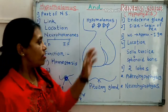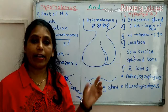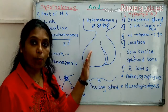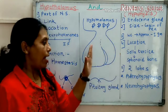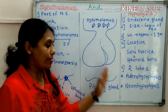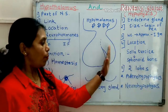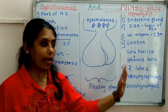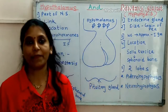Broadly, pituitary gland is divided into two parts: the anterior lobe and the posterior lobe. The anterior lobe is called as adenohypophysis and the posterior lobe is called as neurohypophysis.